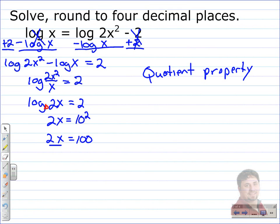Next, we divide both sides by 2 using the division property of equality. The 2s on the left cancel, giving us x equals 50.